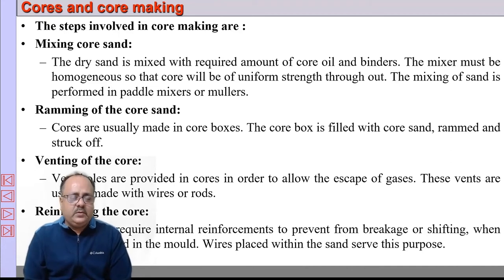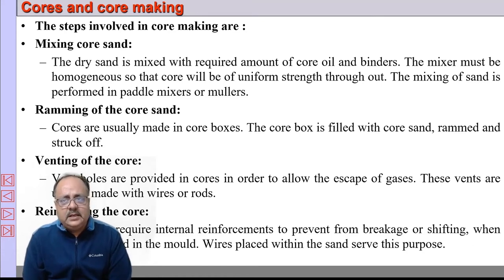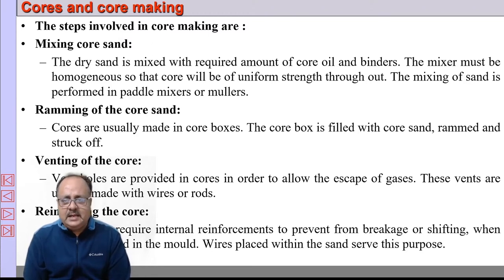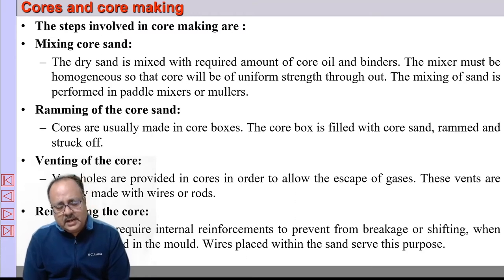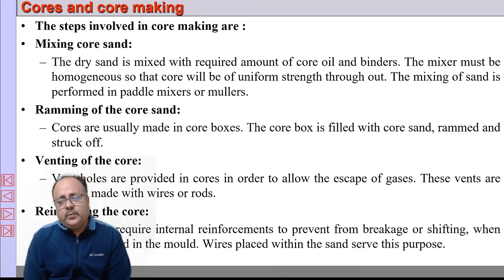For core making, first we mix the sand with the core oil and binders uniformly. Then the mixed core sand is placed in the core boxes and rammed properly, and excess sand is struck off. Using a vent wire, we make venting holes in the core so there is enough space for gases to escape. Then the core is reinforced — steel wires are inserted inside the core to provide more strength, as the core comes under heavy pressure from the molten metal.